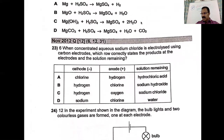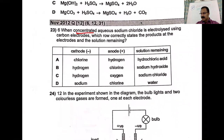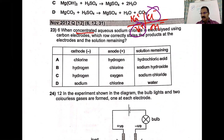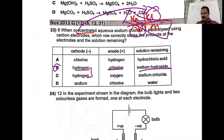When concentrated aqueous sodium chloride is electrolyzed using carbon electrodes, which correctly states the products? Na⁺, Cl⁻, H⁺, OH⁻ are the ions. H⁺ is selected at the cathode; since it is concentrated, Cl⁻ is selected at the anode. So cathode gives hydrogen and anode gives chlorine. The solution remaining will be sodium hydroxide. The answer is B.